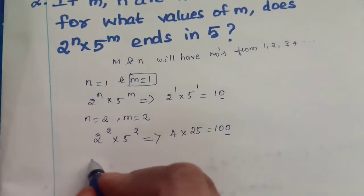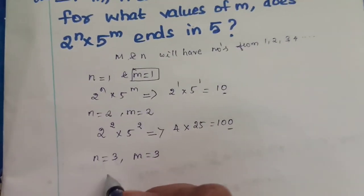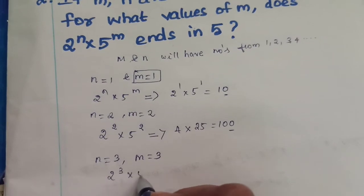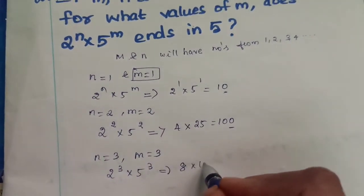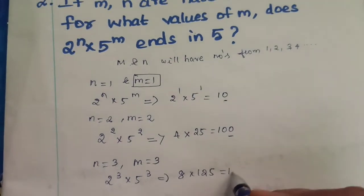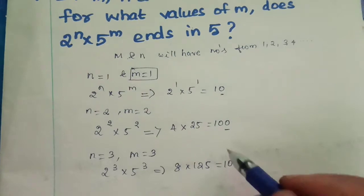Next, n is equal to 3 and m is equal to 3. So 2 cube into 5 cube. 2 cube is what? 8. 8 into 125 that is equal to 1000. So they are all ending with 0 only. See, they have asked only m value.